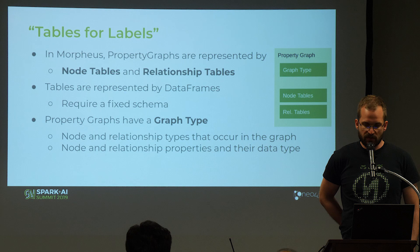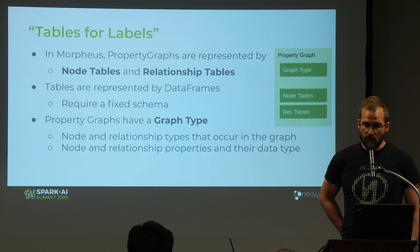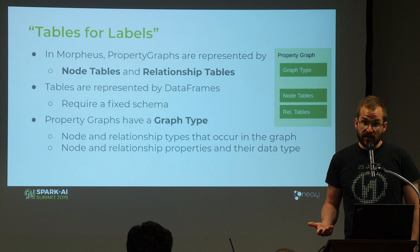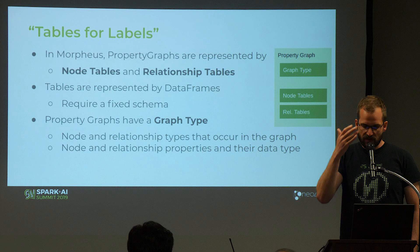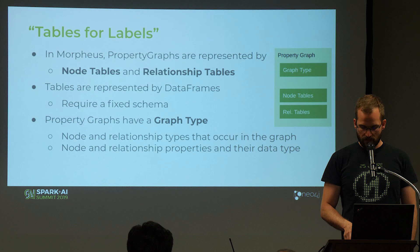How are graphs represented within the system? We have the concept called 'tables for labels.' A property graph has nodes and relationships; nodes can have one or more labels, and relationships always have a single relationship type. For each label combination, we have a node table, and for each relationship type we have a relationship table. Those tables are represented by data frames, which require a fixed schema — that's why we introduced the concept of 'graph type,' also called graph schema, which defines what label combinations exist, what relationship types exist, and what their properties and data types are.